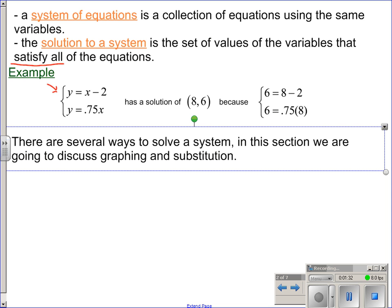So, we have this system, y equals x minus 2 and y equals .75x. You have this system. I'm just going to tell you the solution is (8, 6). This is an x value. This is a y value. So, our answer is just a point.